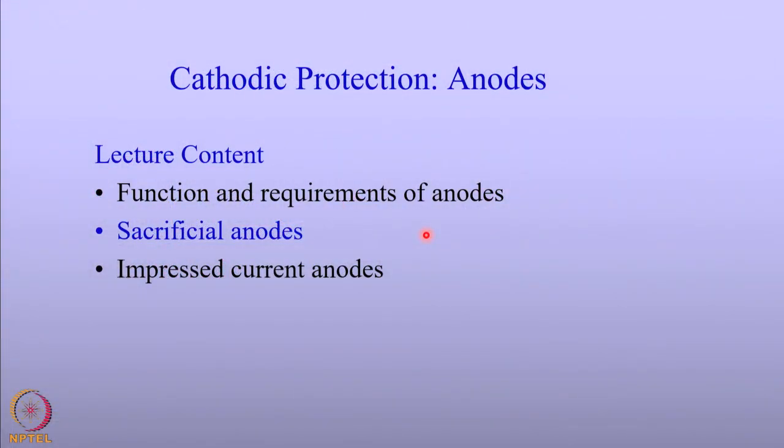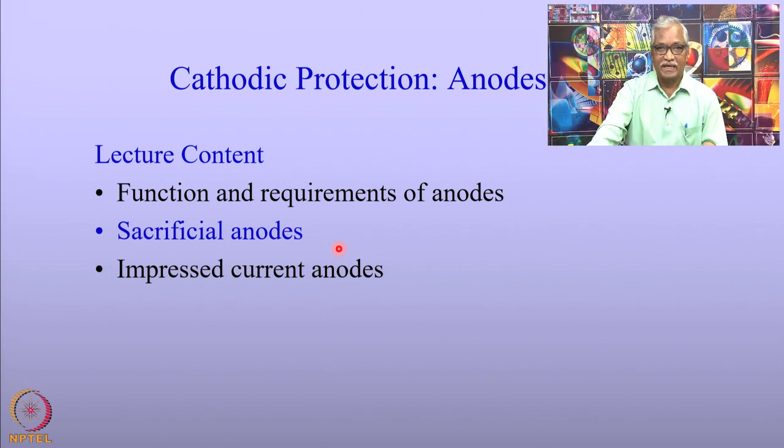Welcome to the lectures on cathodic protection engineering. In the lecture on anode ground bed, we discussed the relation between soil resistivity, anode dimension, and the relation to the ground bed resistance offered for cathodic protection of engineering structures. It is important to understand how the anodes perform in order to have better anodes. In this lecture, we will discuss these aspects: the function and requirements of anodes, how sacrificial anodes are performing, and a brief discussion on the impressed current anodes.